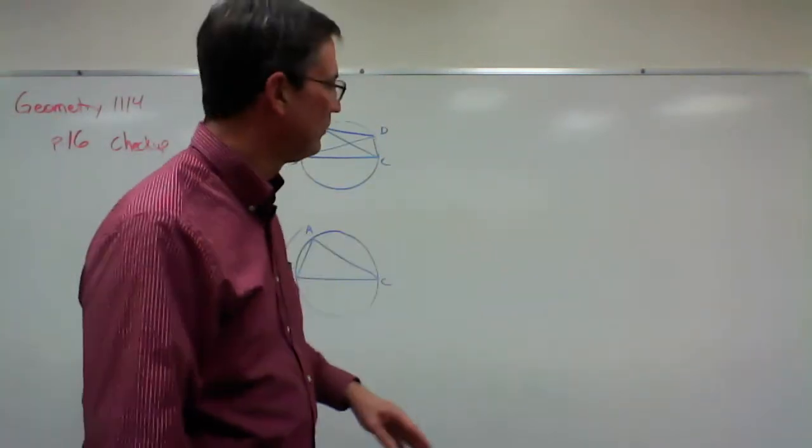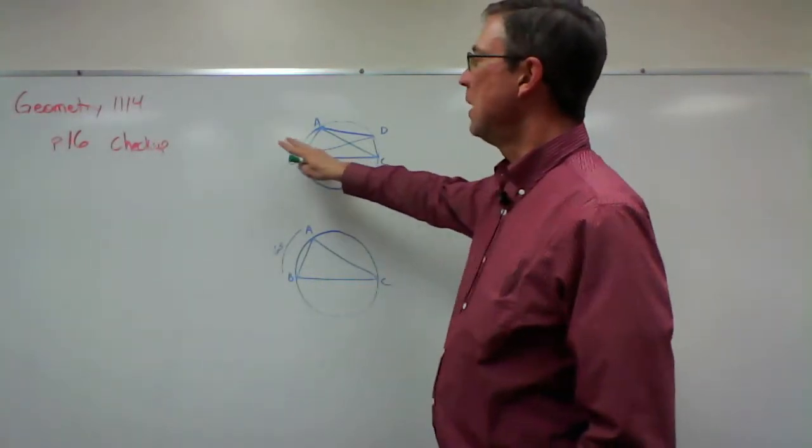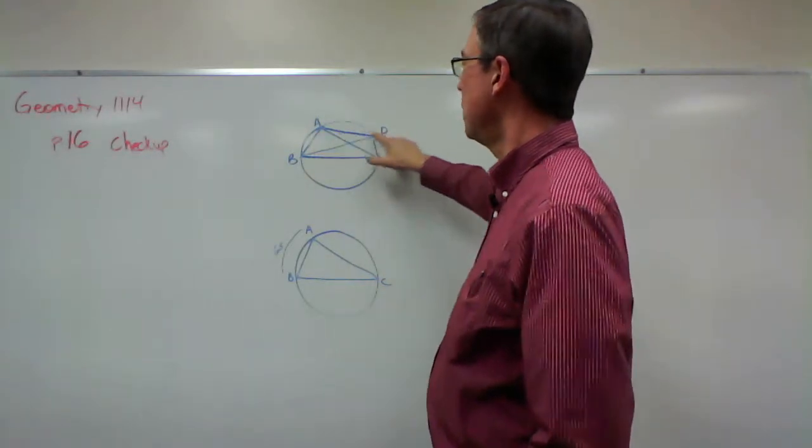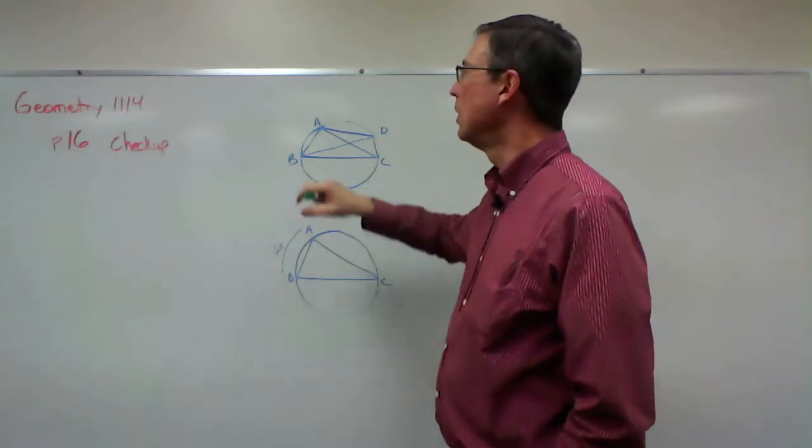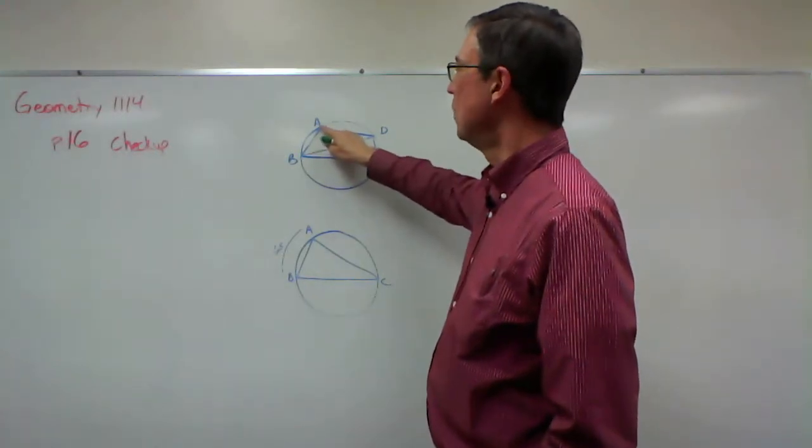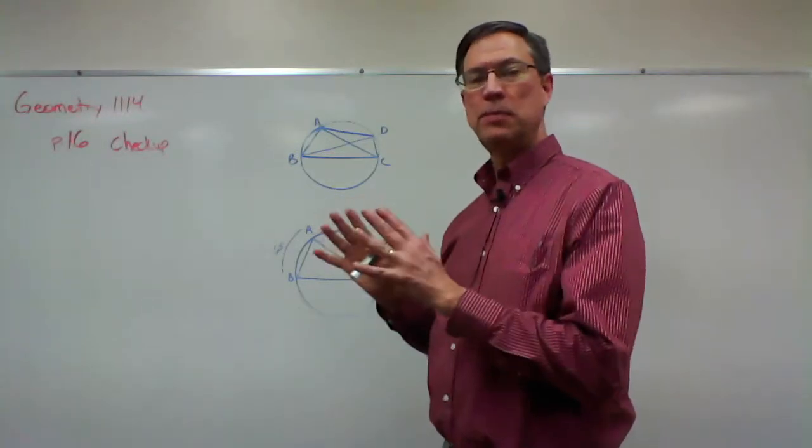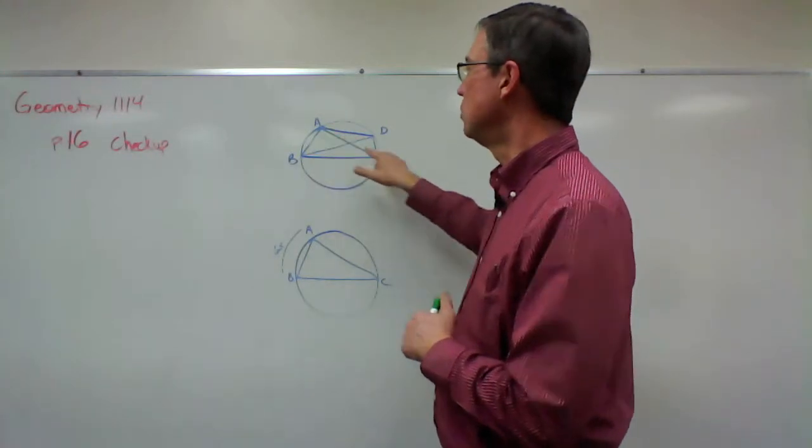Before you do this checkup, we talked about in an earlier video, just a reminder, when we have a quadrilateral embedded in a circle, inscribed, do you remember what angle A and angle C's relationship is? They're called supplementary angles, so they're going to add up to a certain number of degrees.